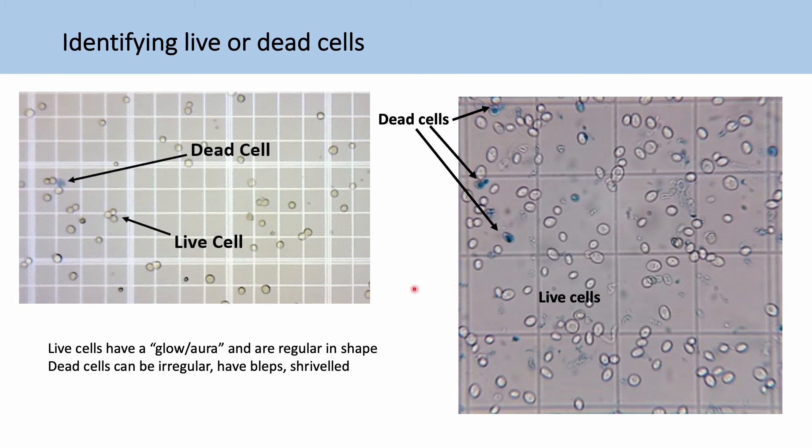So this is what it will look like under the microscope with a cell solution and also using trypan blue to distinguish your dead cells. So your dead cells will have taken up the blue dye. So they'll be blue like here, here, here.